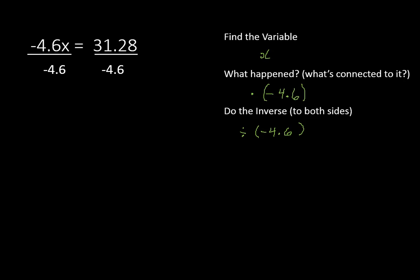Now, when we are dividing negative 4.6 divided by negative 4.6, they will cancel each other out, and you'll be left with x on the left side. On the right side, we're taking a positive number divided by a negative number. So we have to remember the rules for dividing positive and negative numbers. Positive divided by a negative gives us a negative result. So x is equal to negative 6.8.